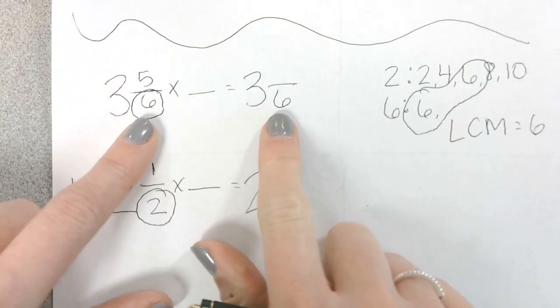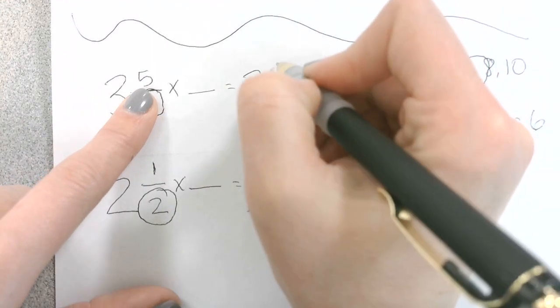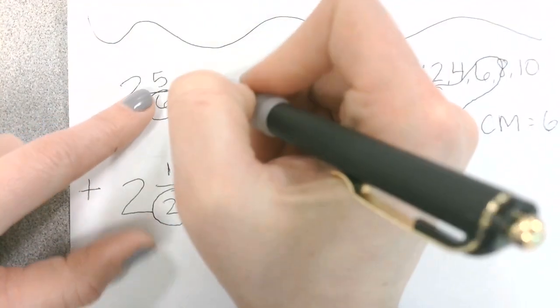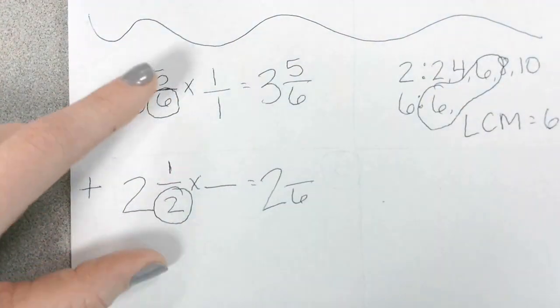Did my denominator change here from 6 to 6? No. So my numerator will not change either. It stays 5 sixths. If you want to put something here, you can put 1 over 1.